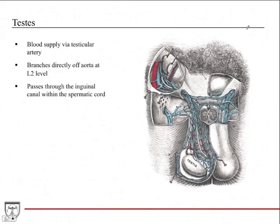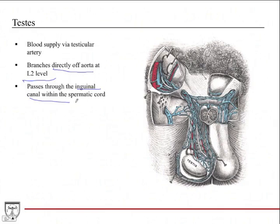The blood supply of the testicles is via the testicular artery, which branches directly off the aorta in the abdomen — so it's an abdominal vessel. It branches off at the L2 level, and after branching off, it passes through the inguinal canal within the spermatic cord. As shown in the diagram, it comes down and supplies the testicle directly.